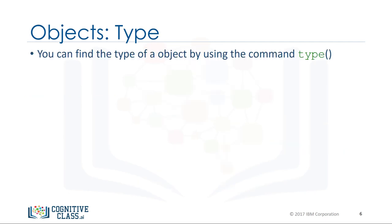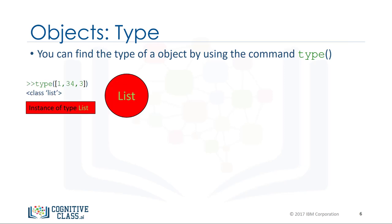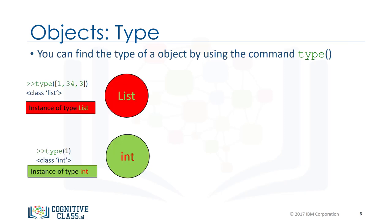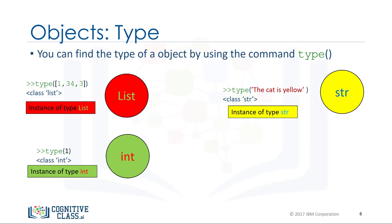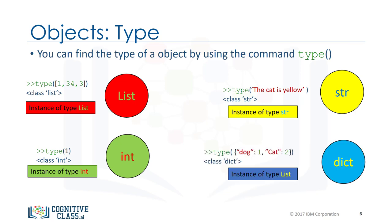We can find out the type of an object by using the type command. In this case we have an object of type list, an object of type integer, an object of type string, and finally an object of type dictionary.